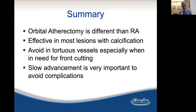In summary, orbital atherectomy is different than rotational atherectomy. Orbital atherectomy is effective in most calcified lesions. Orbital atherectomy should be avoided in tortuous vessels, especially when front cutting is needed. The key technical point is slow advancement and slow retraction of the crown. The crown cuts both ways, and fast movement is detrimental — it causes more complications and less effective cutting.